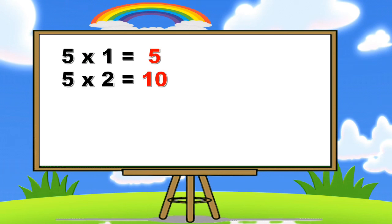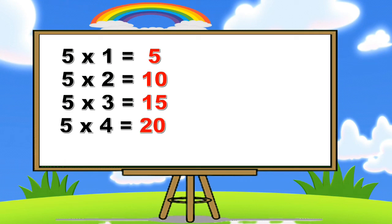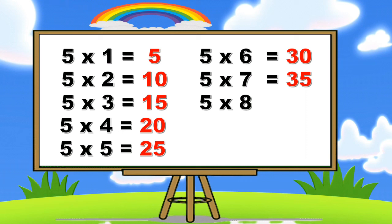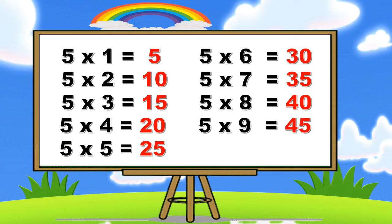Five threes are fifteen. Five fours are twenty. Five fives are twenty-five. Five sixes are thirty. Five sevens are thirty-five. Five eights are forty. Five nines are forty-five. Five tens are fifty.